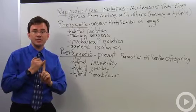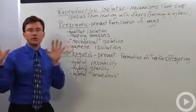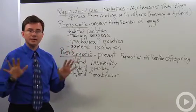Prezygotic reproductive isolating mechanisms fall into several different categories. There's habitat isolation. If the two species live in different locations and their habitats never coincide, that will keep them isolated.